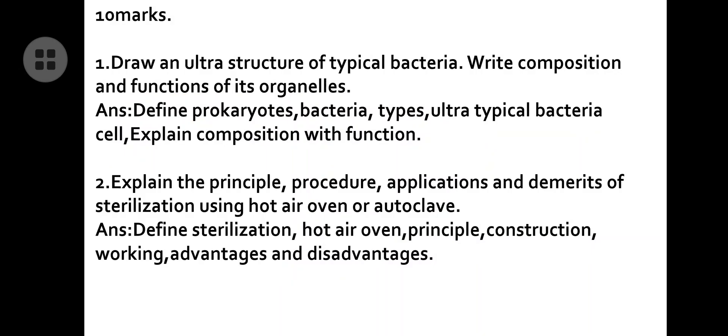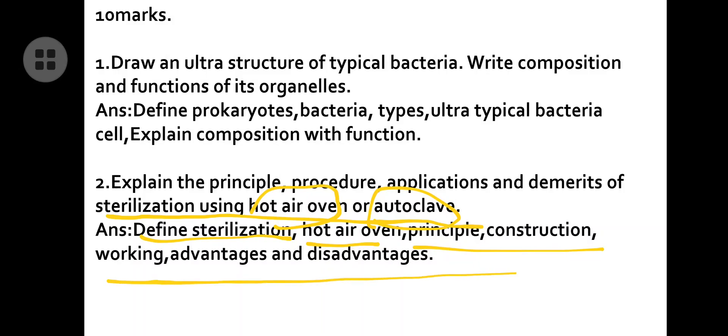Second question: explain the procedure, application, merits and demerits of the hot air oven or autoclave. Sometimes they will ask about the hot air oven and sometimes about the autoclave — you have to be perfect on both. First define sterilization, then go for the hot air oven covering principle, construction, working, advantages, and disadvantages. For autoclave, do the same: define sterilization, define autoclave, then cover principle and construction. Sometimes they ask about sterilization techniques for utensils, and you use the hot air oven or autoclave for that.